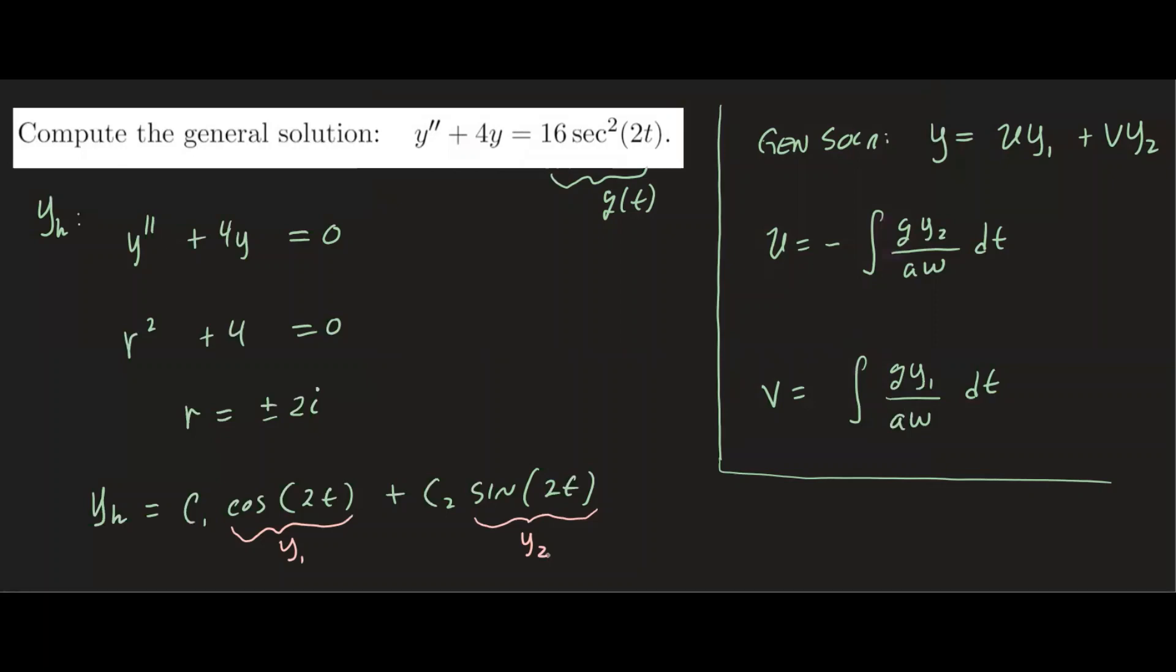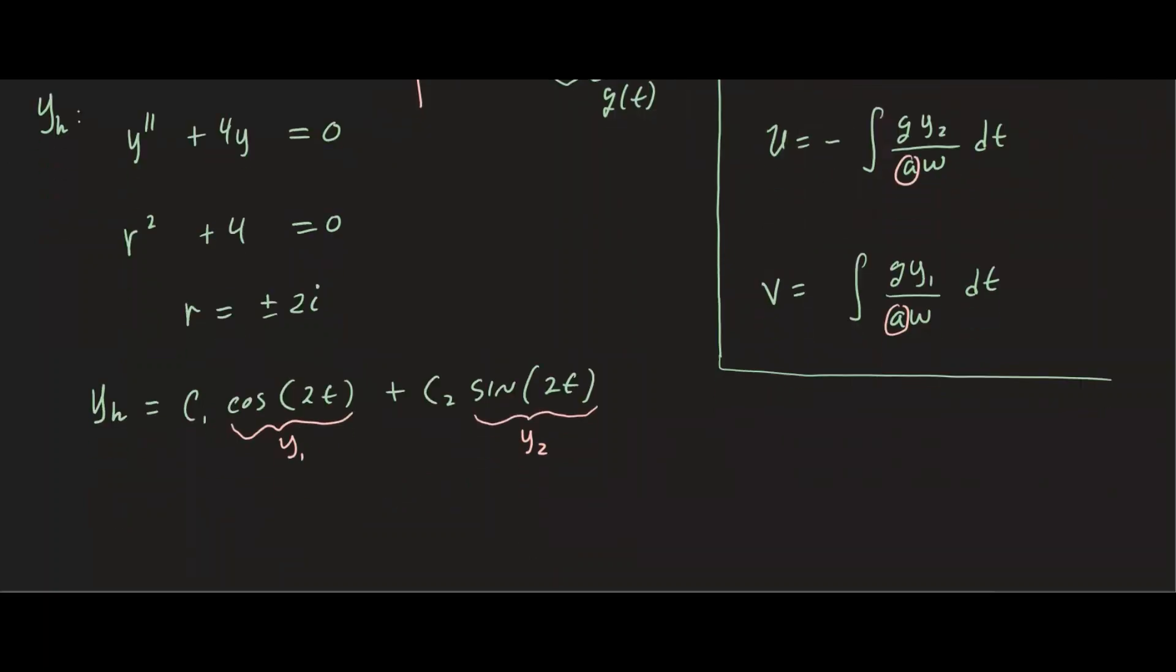Now we're going to compute the Wronskian. And keep in mind this a is the coefficient in front of your y double prime. In this case it's 1, so a is 1.